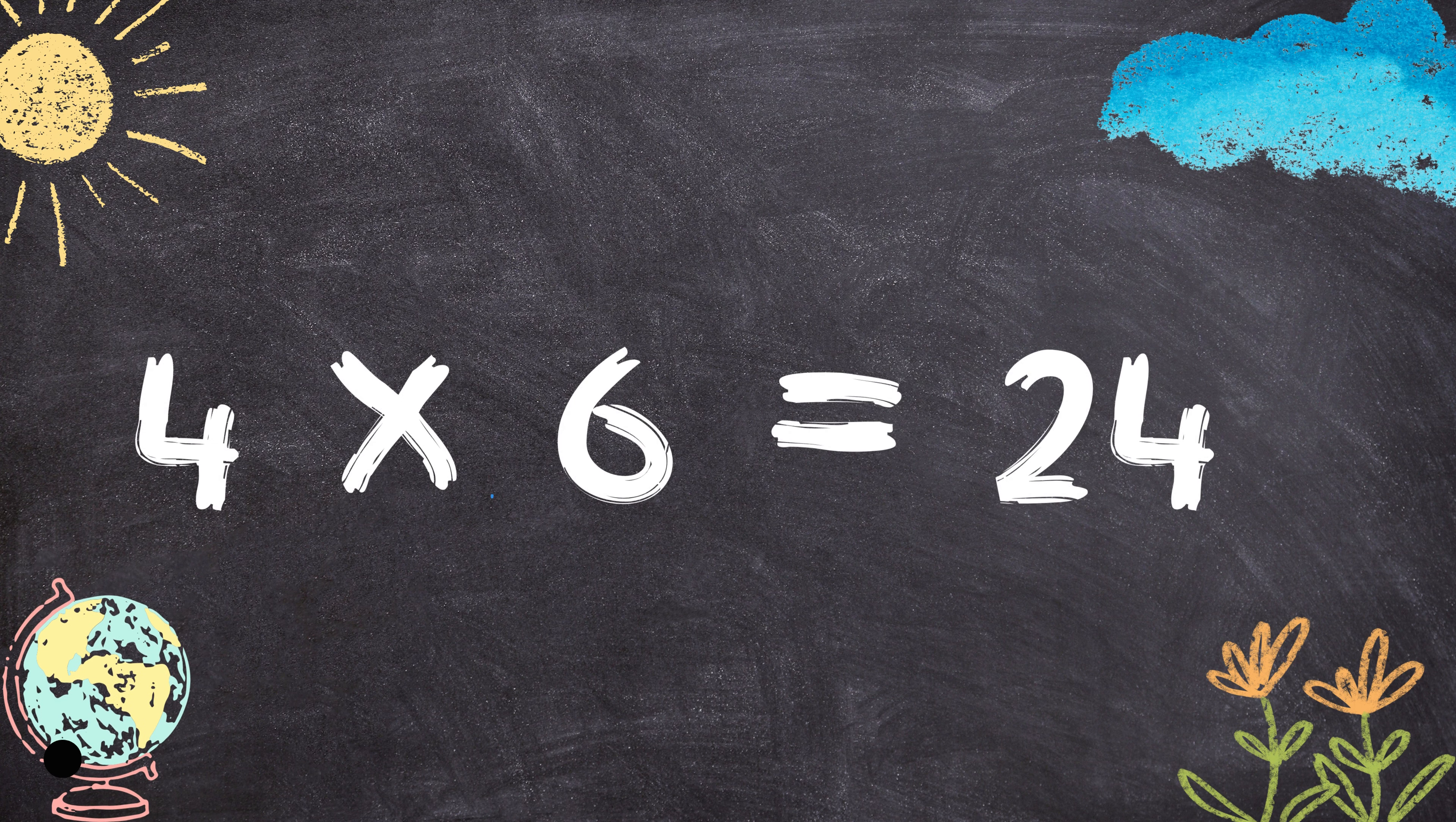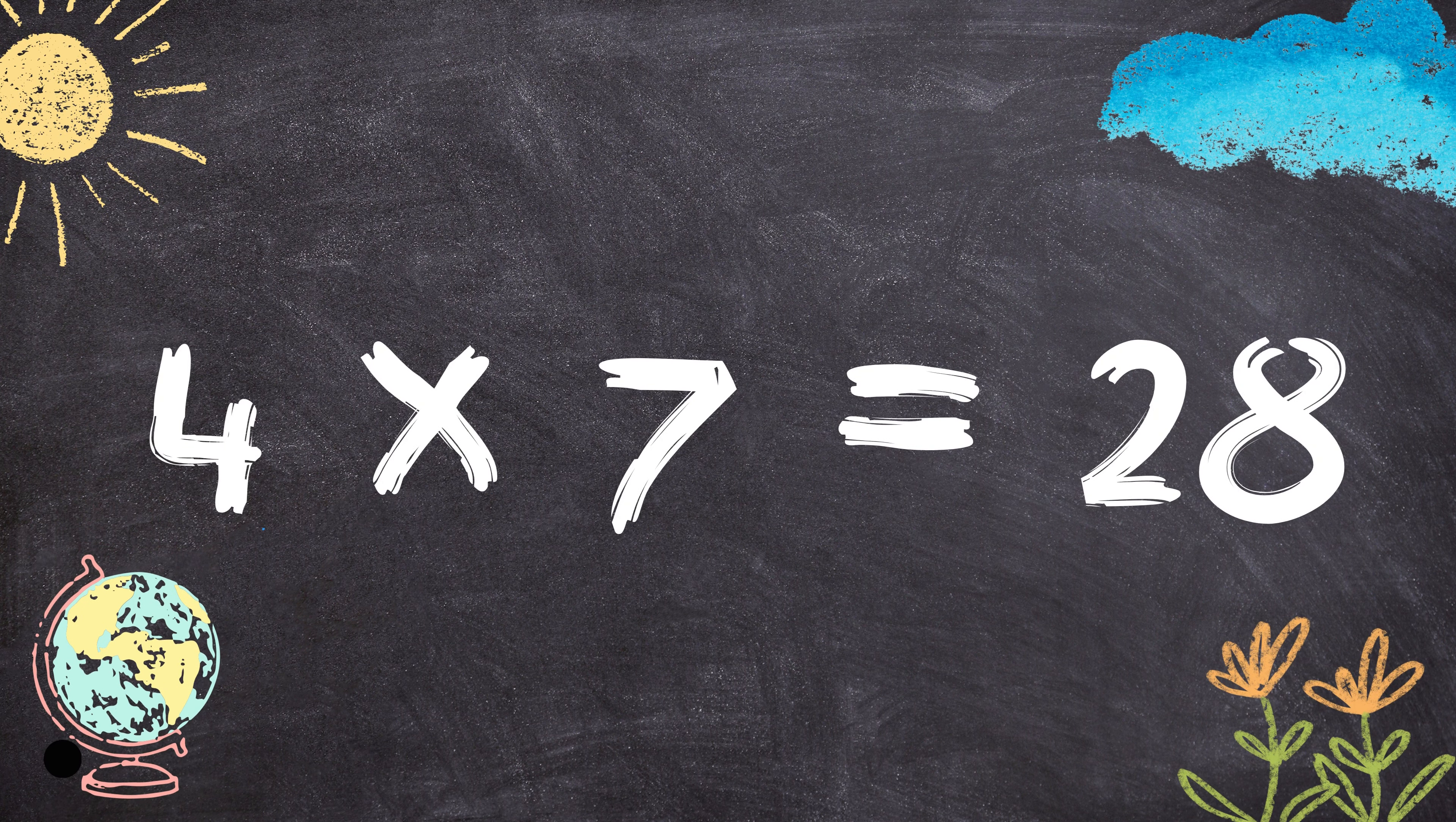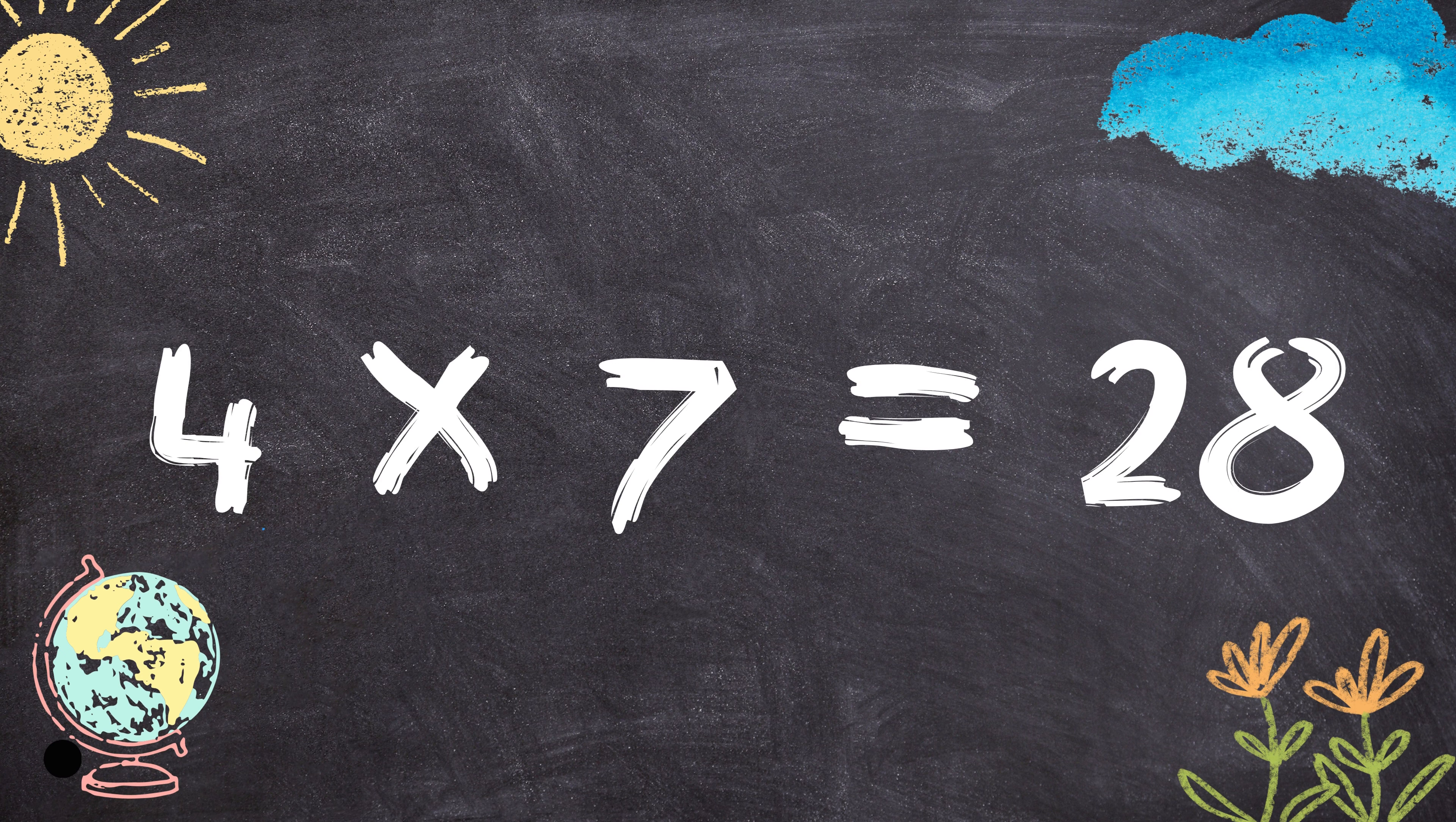4 times 6 equals 24. 4 times 7 equals 28.